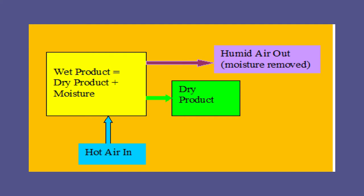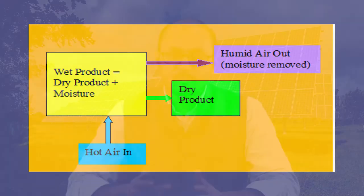A wet product will be there — wet product means dry product content with moisture — and we blow some hot air inside that wet product. That hot air extracts the moisture content of that product and we end with the dry product and the humidity or moisture removed from the wet product. We get a dry product which has some basic level of moisture and can be stored for a longer duration.